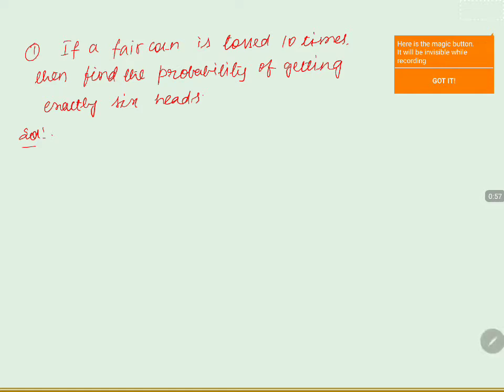Here, the coin is tossed n = 10 times. The probability of getting a head from the coin is p = 1/2. Getting a head is the success. We know the relation between p and q: p + q = 1.